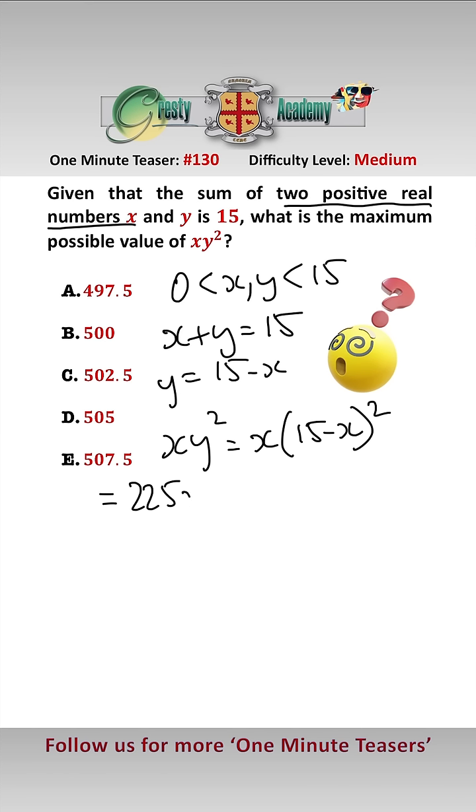Expanding that equals 225x minus 30x squared plus x cubed.